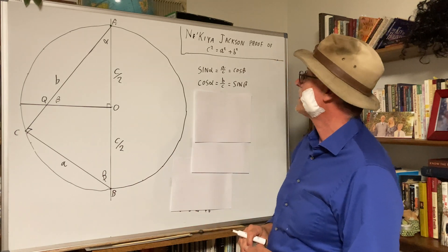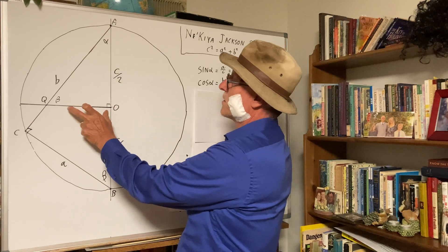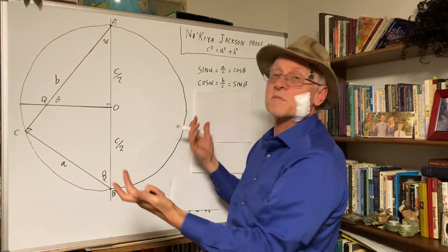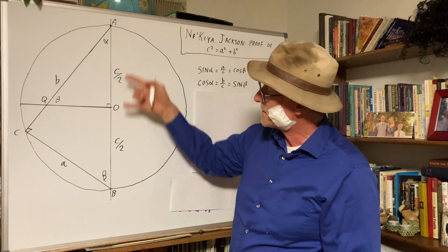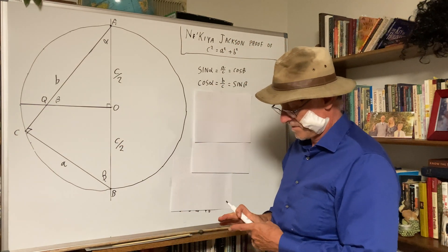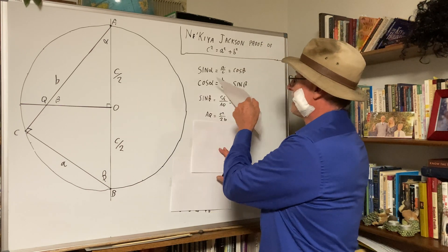All right, and so our job is really to find out what the lengths OQ and AQ are in terms of A, B, and C. And then once we know that, we're practically there. All right, so let's see what happens.